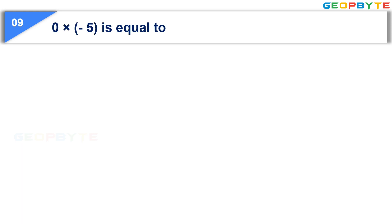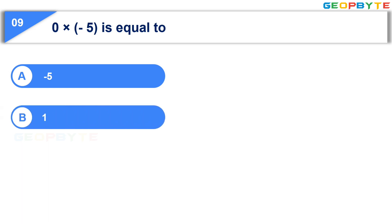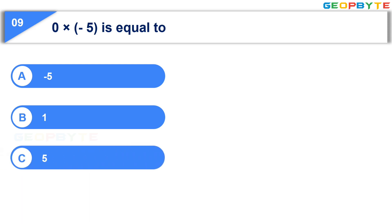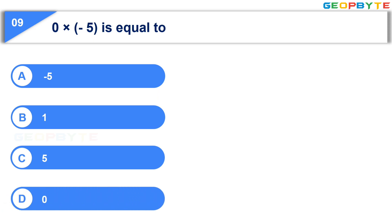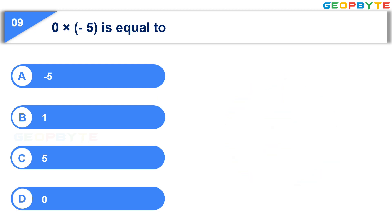The ninth question: 0 multiplied by minus 5 is equal to — Option A: minus 5. Option B: 1. Option C: 5. Option D: 0. Your time starts now. Your time is up. And the correct answer is Option D: 0.